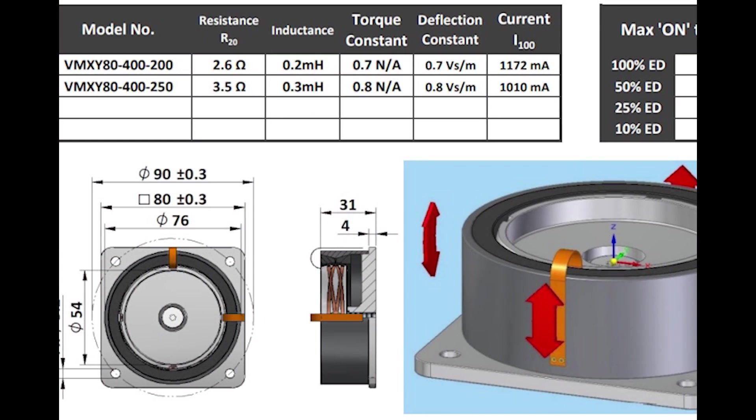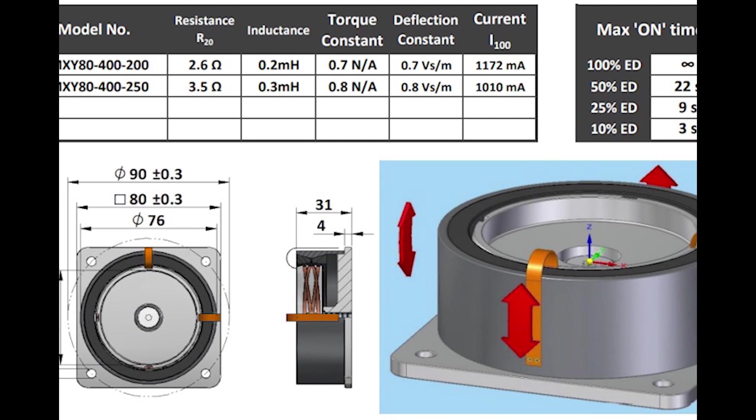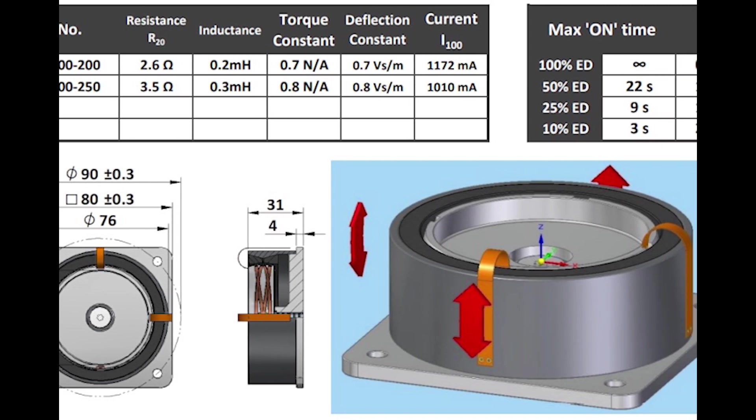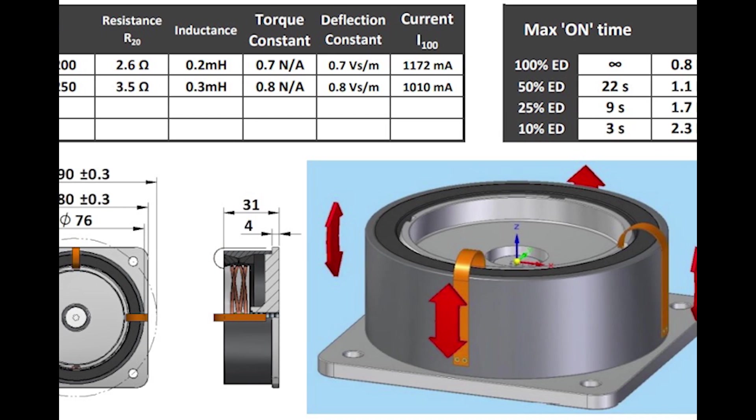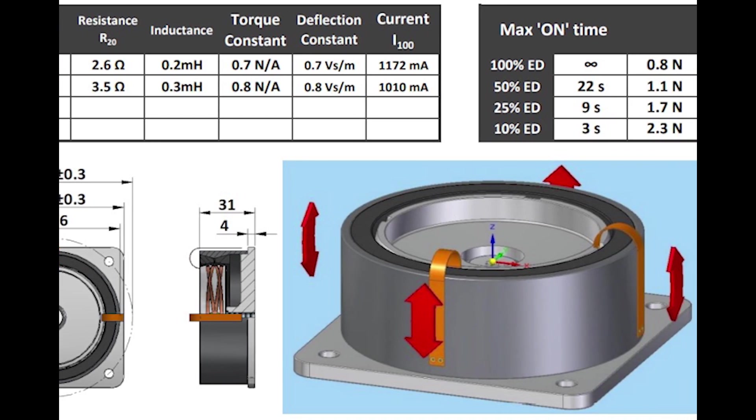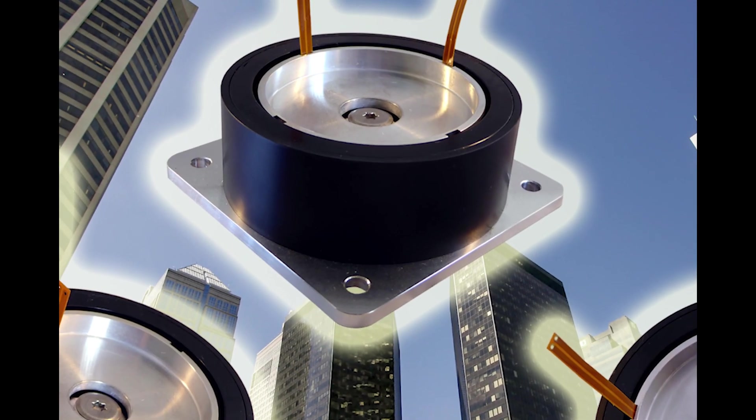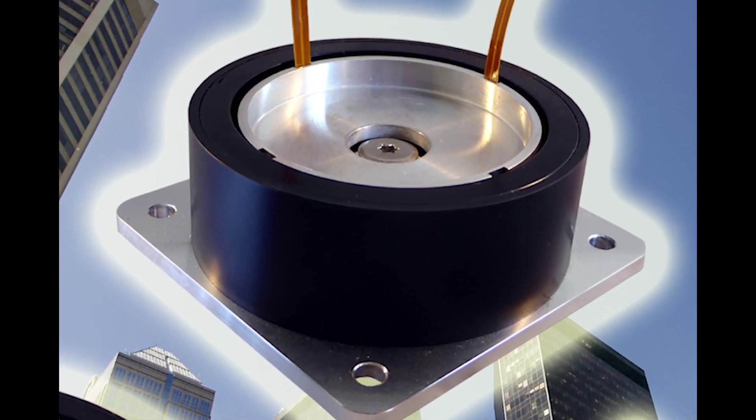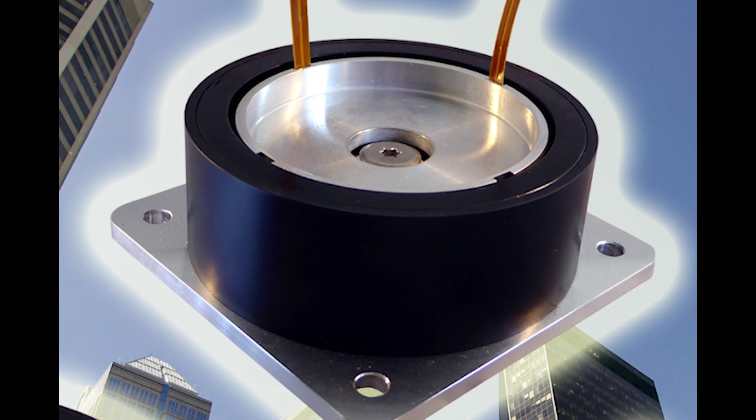This part is also scalable, enabling the manufacture of smaller or larger moving coil devices with similar construction. The 80mm diameter on the actuator is approaching the upper size limit for which radial magnets are available, but larger parts can be created using segmented magnets and may be more readily manufactured with a square footprint.